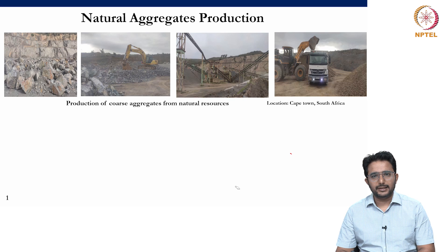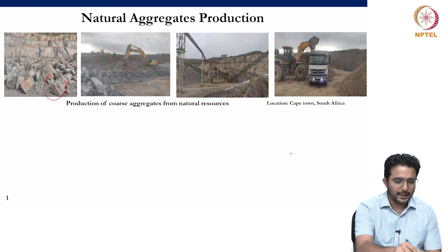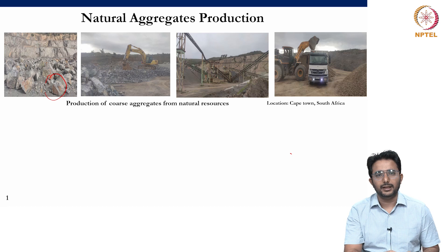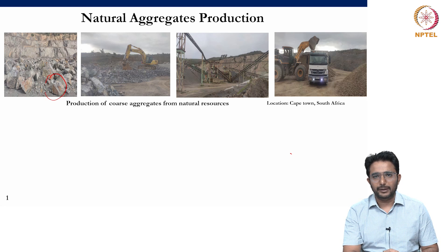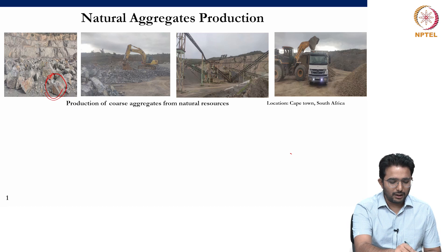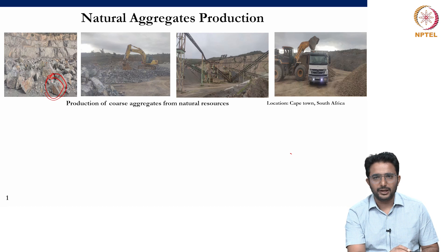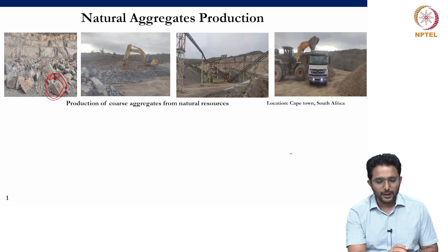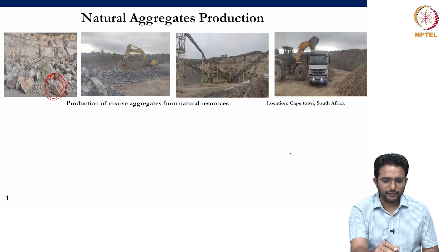As you can see in the pictures, for the generation of natural aggregates, we first go to the mountains, put some detonators, and then a blast occurs leading to the generation of big-size boulders. It is very difficult to transport these big-size boulders directly to the crushing units because the volume occupied by them is higher. Therefore, size reduction is done at the site itself with the help of different techniques.